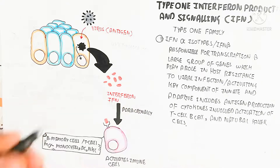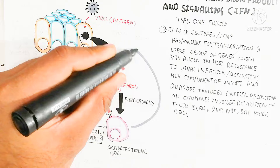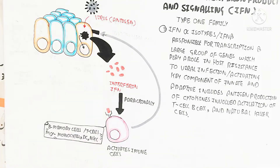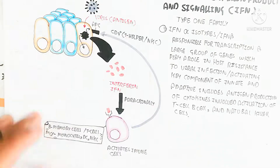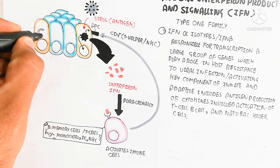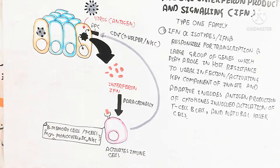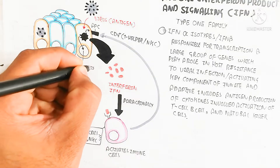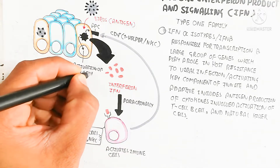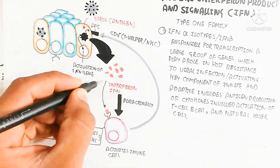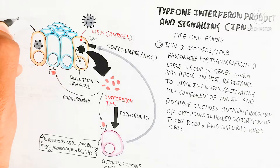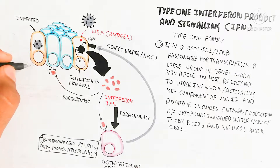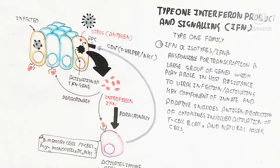So B memory cells, T cells, macrophages, monocytes, dendritic cells, and natural killer cells will be activated. The T helper and natural killer cells will kill the infected cell, while the infected cell after binding with interferon receptor through the interferon paracrinally will undergo apoptosis. Importantly, the non-infected cell also binds with interferon, which will destroy RNA and reduce protein synthesis.